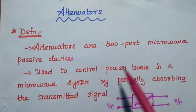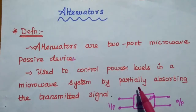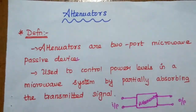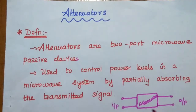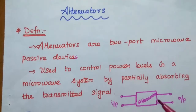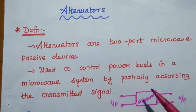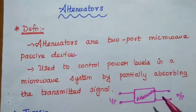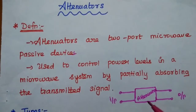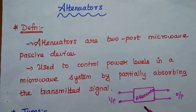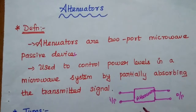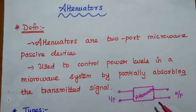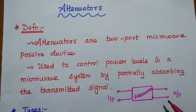So how are we going to control the power levels? By partially absorbing the transmitted signal. In a matched termination, the entire signal is absorbed, but in an attenuator it absorbs the signal partially based on our application. So it is a two-port network as well as a reciprocal device, meaning any one of the ports can be used as input and output.